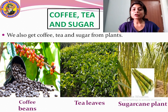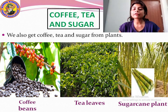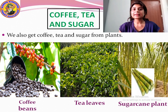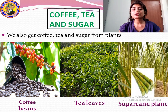Plants also give us coffee, tea and sugar. We get coffee from coffee plants — the beans that grow on the coffee plant are plucked and dried, then made into the coffee we drink. We get tea from tea leaves — the leaves of the tea plant are dried and made into tea.